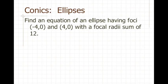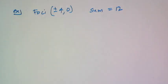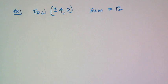Now for this example: find an equation of an ellipse having foci at negative 4, 0 and 4, 0 with a focal radii sum of 12. We're going to use the shortcut for this one rather than the definition, which you saw earlier requires a lot of work.